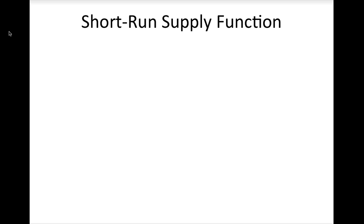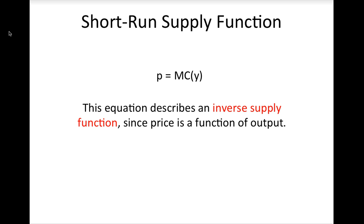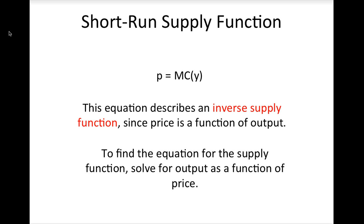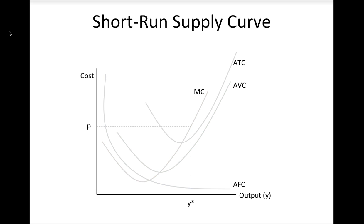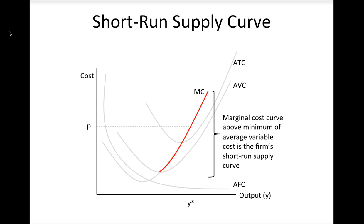We can now characterize the firm's short-run supply function. Mathematically, the function is described by the equation price equals marginal cost, where marginal cost is a function of output. Technically, this is an inverse supply function since it describes price as a function of output. To find the supply function, solve this equation for output as a function of price. Graphically, since the firm chooses its output level by setting price equal to marginal cost for any price above the minimum of average variable cost, the firm's short-run supply curve is simply the portion of its marginal cost curve that is above the minimum of average variable cost. This curve tells you how much output the firm will produce at a given price, which is the definition of a supply curve.